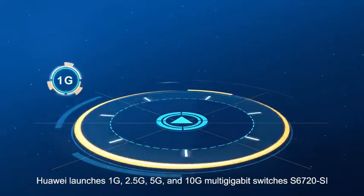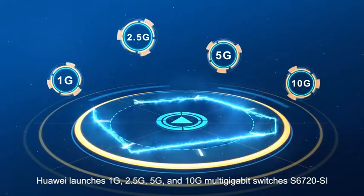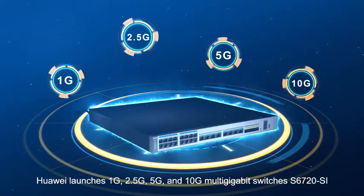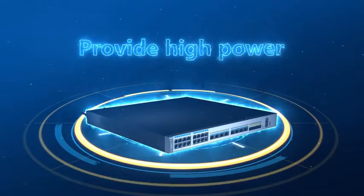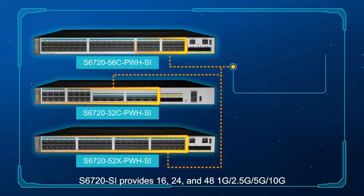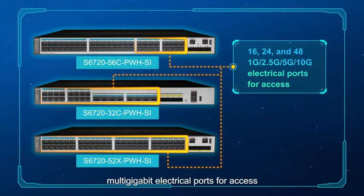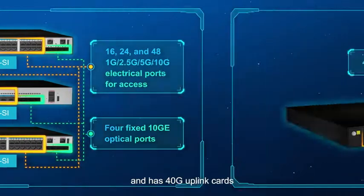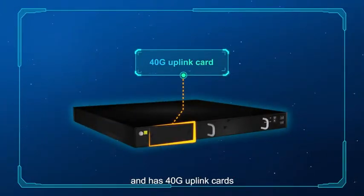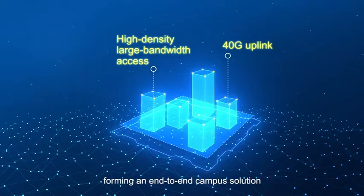Huawei launches 1G, 2.5G, 5G, and 10G multi-gigabit switches S6720-SI to meet access requirements of WLAN APs and high-power powered devices. S6720-SI provides 16, 24, and 48 port 1G, 2.5G, 5G, and 10G multi-gigabit electrical ports for access. It provides four fixed uplink 10GE optical interfaces and has 40G uplink cards, implementing high-density, large bandwidth access and 40G uplink, forming an end-to-end campus solution.